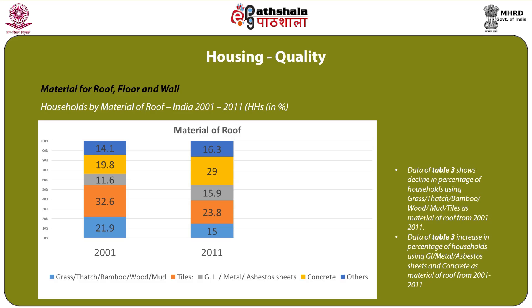Overall, data from Table 3 shows a decline in percentage of households using grass, thatch, bamboo, wood, and mud tiles as material for roof from 2001 to 2011. It also shows an increase in percentage of households using GI, metal, asbestos sheets, and concrete as roof material from 2001 to 2011.